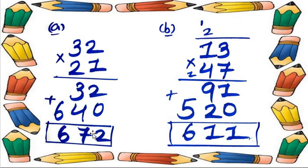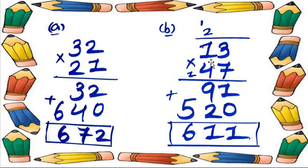Now question number B: 13 multiplied by 47. Step 1: 7 is multiplied with 3 and then with 1. 7 threes are 21 — we put 1 as the digit and 2 as carry. Then 7 ones are 7, plus 2 carry gives 9.